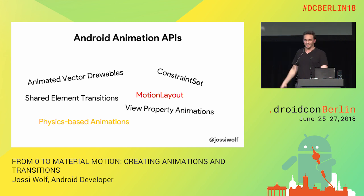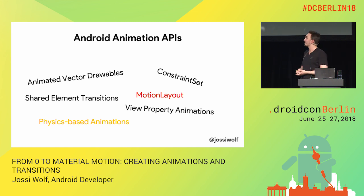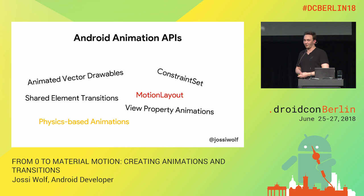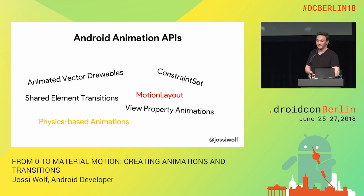And marked in red, there is motion layout. At Google I/O, motion layout was announced. It's basically a subversion of constraint layout that helps you add animations and transitions more easily. Just this morning, they posted the first alpha version online. And it's backward compatible to API 18, so that's good for those of you who are not on API 21 yet.